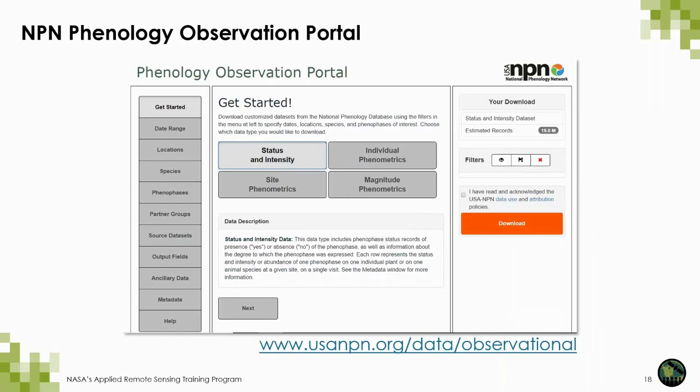The NPN catalogs all of this information and other data collected by scientists into their phenology observation portal. You can download customized data sets of observational data from the National Phenology Database, which includes all of the data collected via Nature's Notebook. For example, you could look at historical lilac and honeysuckle data from 1955 to present. Filters are available to specify dates, regions, species, and phenophases of interest.